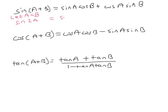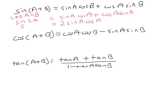So that's sine A cos A plus cos A sine A. Now, as you know, multiplication is commutative, so the order in which you do this doesn't matter. So cos A sine A is the same as sine A cos A. So altogether, we've got 2 sine A cos A. So sine 2A is 2 sine A cos A. That's the first double angle formula.